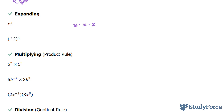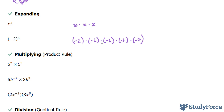Here we have negative 2 in brackets to the power of 5. In this case, we would take our negative 2, our base, and multiply it by itself five times. These two negatives give us a positive 4. Positive 4 times negative 2 gives us negative 8. Negative 8 times negative 2 gives us positive 16. And positive 16 times negative 2 is equal to negative 32.